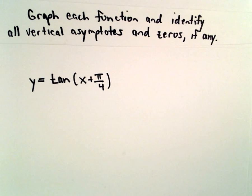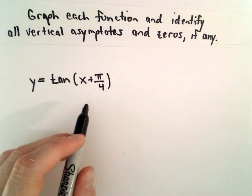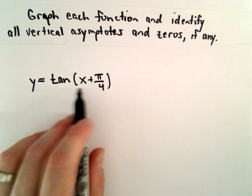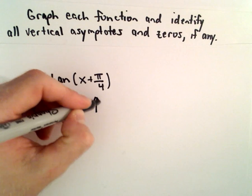Here we're going to graph the function y equals tangent of x plus pi over 4, and the only thing that is different about this graph when compared to just tangent of x is because of this plus pi over 4.